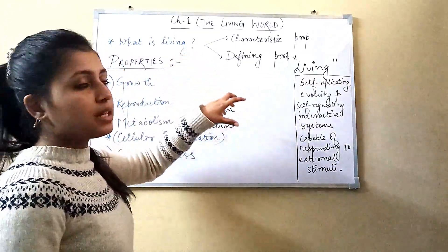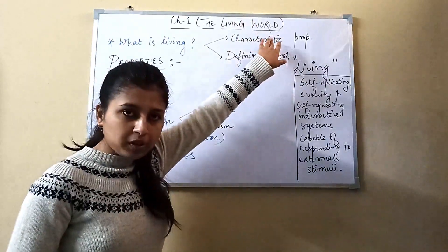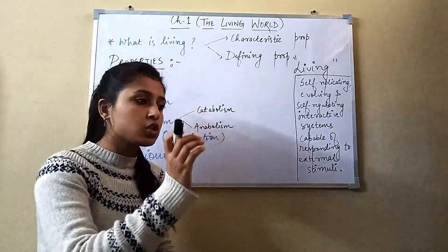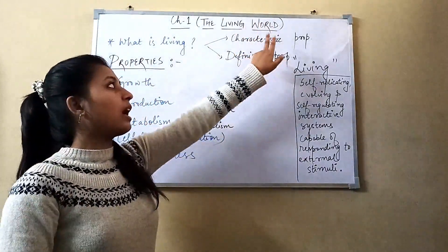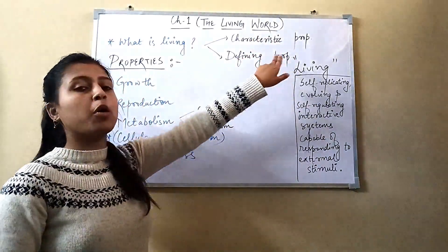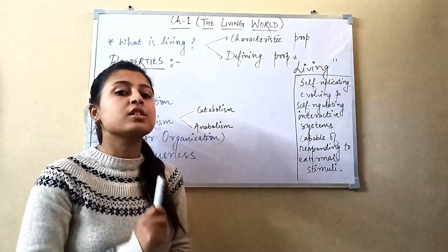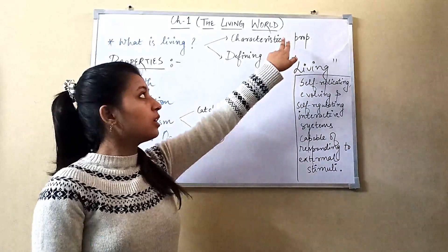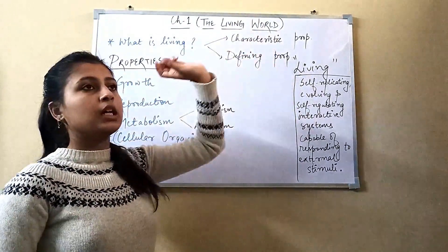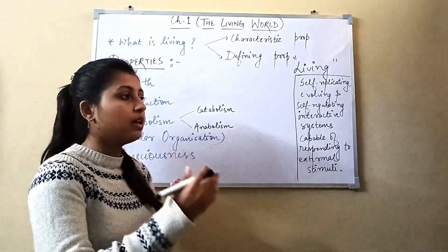Properties can be grouped in two ways: characteristic properties and defining properties. Characteristic properties are those that we use to describe or relate to a particular organism. Defining properties are exclusive to living organisms only. A defining property is specifically and exclusively used to define what is living or non-living, while a characteristic property is not exclusive.